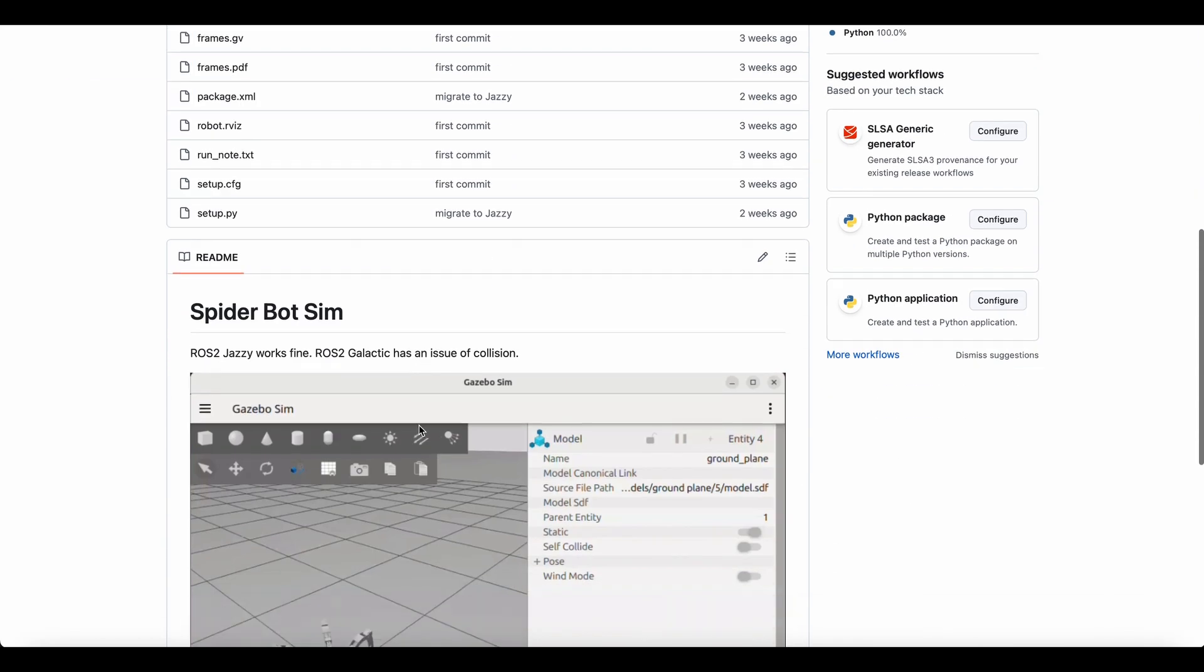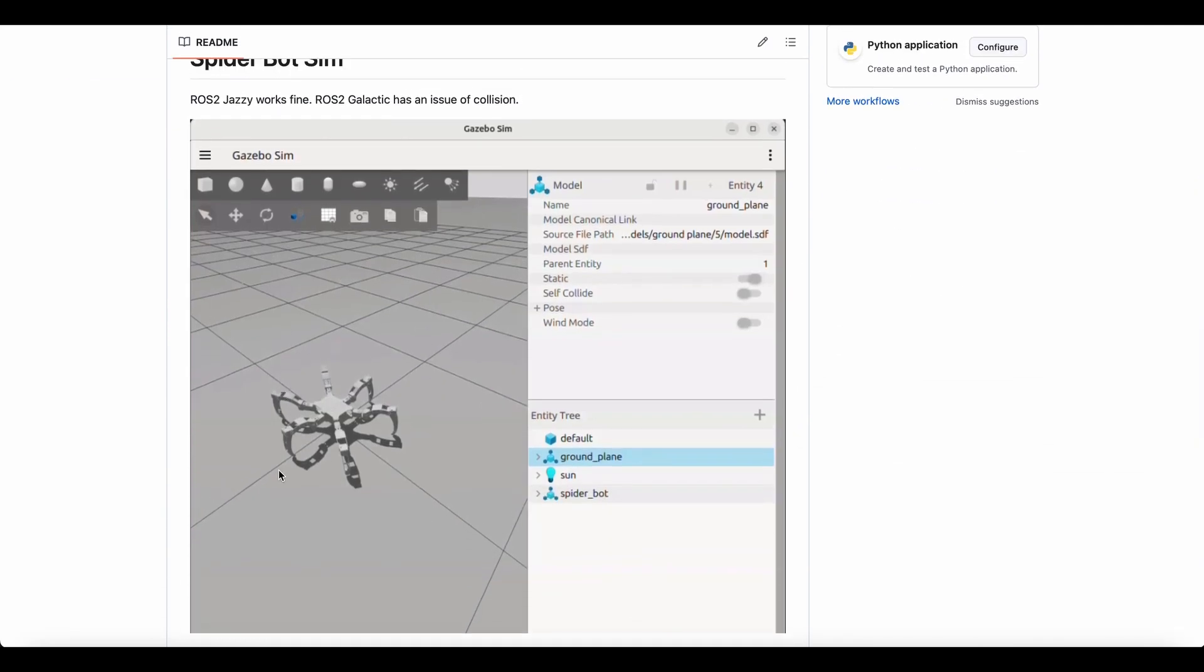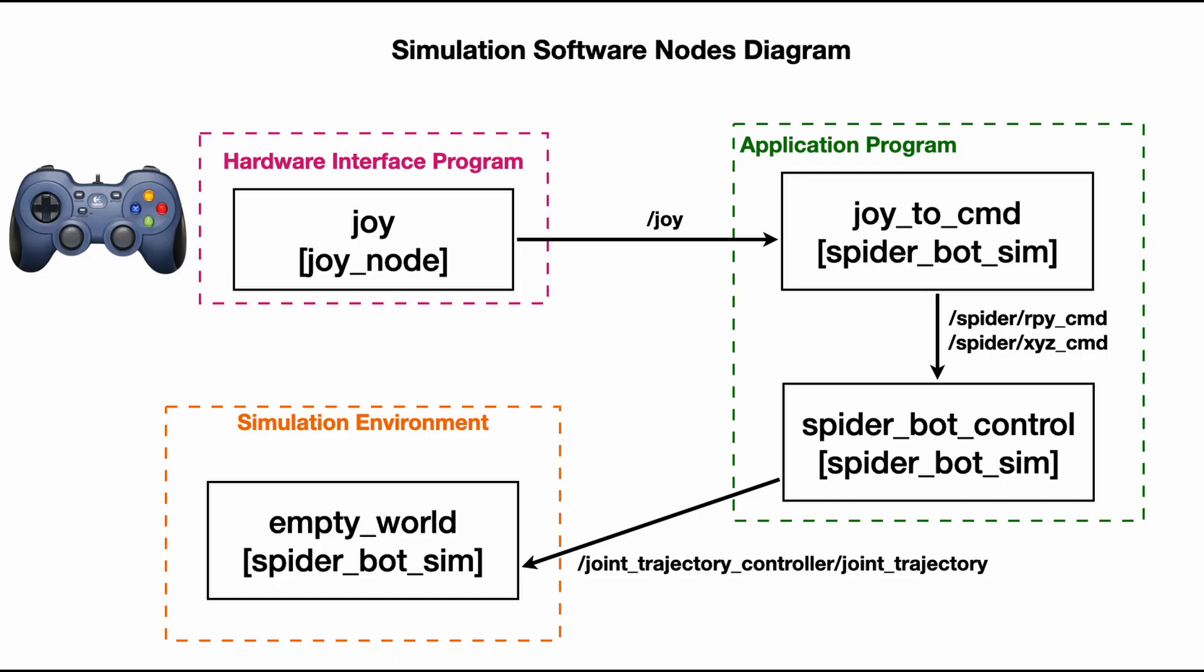I have made a simulation model of this hexapod robot. So it works well on Jazzy Distro, but not on Galactic. This package will be available for the membership of Izakaya plant. The package will spawn the robot in empty world of Gazebo. To drive each joint of the robot, we need to publish joint trajectory controller topic. And that is the role of the spiderbot control node. To send the roll pitch yaw or XYZ commands, I'm going to use joystick and run joy node to get data from analog stick. Then joy to command node will convert that to the command for the spiderbot control node.